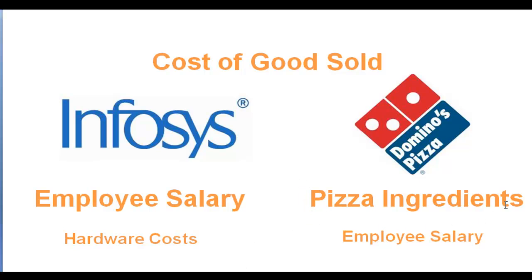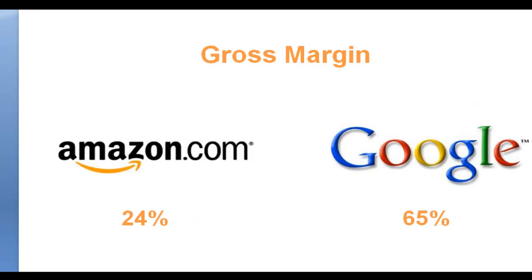For Domino's, the biggest component of cost of goods sold is the actual ingredients and materials that go into the pizza. Employee salary is a minor element — the chef and the person who came up with the recipe are a very minor part. Whereas for Infosys, salary is a huge part of cost of goods sold. This differentiation is very important, coupled with our earlier Amazon and Google example of why one company's cost of goods sold is so different from another's.